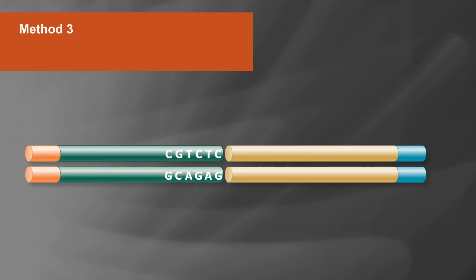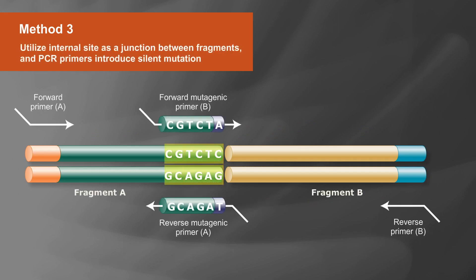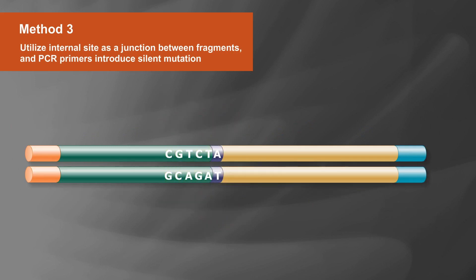Method 3: Alternatively, you can utilize the internal site as a junction between fragments, and PCR primers can introduce the silent mutation into the sequence simultaneously with part generation, eliminating the restriction site.